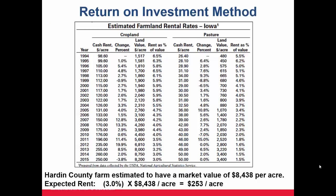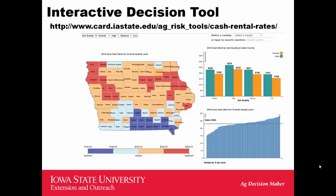Another way to look at return on investment: the ISU land value survey said average crop ground in Hardin County was $8,438. Multiplying by a capitalization rate of 3% gives about $253 needed for rent, so we've been hanging around a 3% capitalization rate. For more data, you can go to the CARD website — the URL is shown on screen. The data is updated online; click on your individual county in Iowa and it will show the high, medium, and low quality rents, compare them to state averages, and show how your county ranks compared to others statewide.